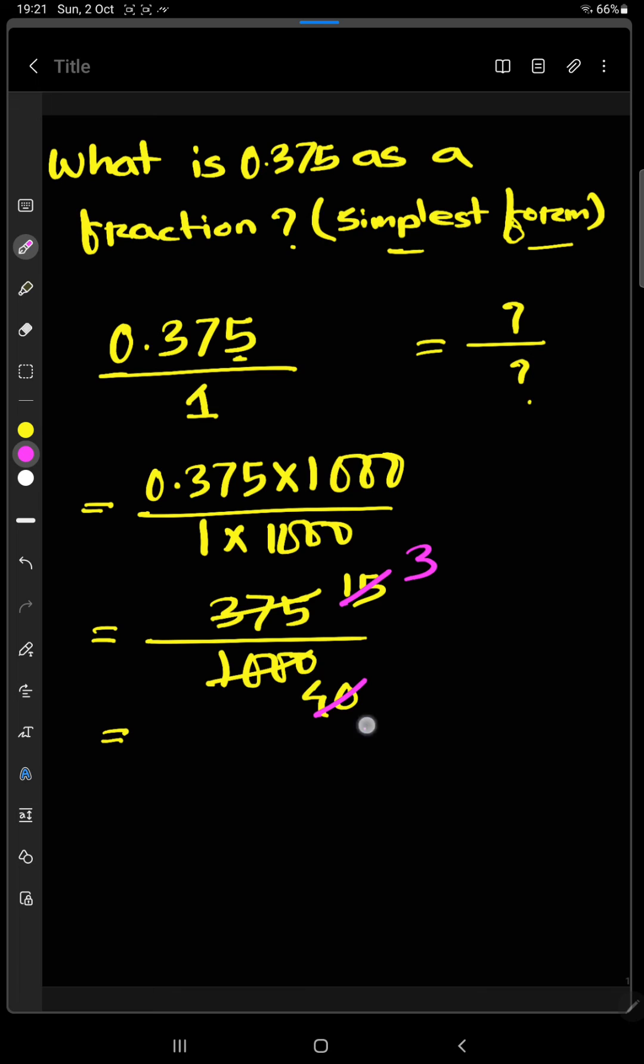So the value is 3 by 8. So we can say 0.375 is equal to 3 by 8. So the fraction of 0.375 is 3 by 8. Hope you got your answer.